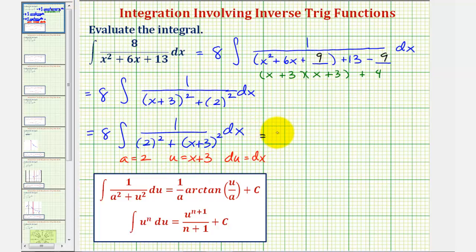So we would have eight times one divided by a, which would be one divided by two or one half, times arctangent of u divided by a, which would be the quantity x plus three divided by two, plus c.